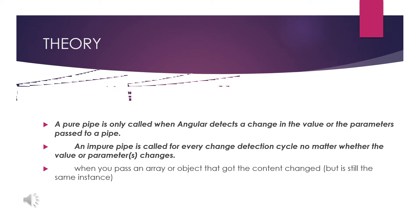In this case, if there is any change in the value or the parameters passed to the pipe, then it will be called as a pure pipe.